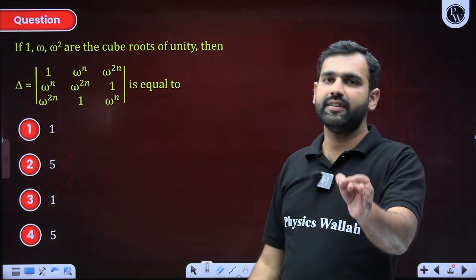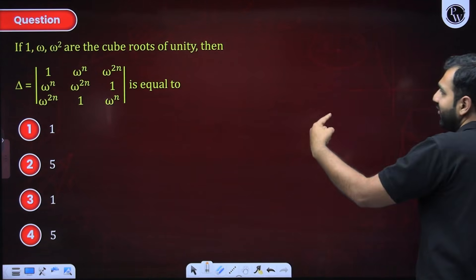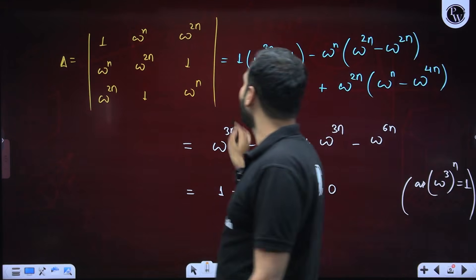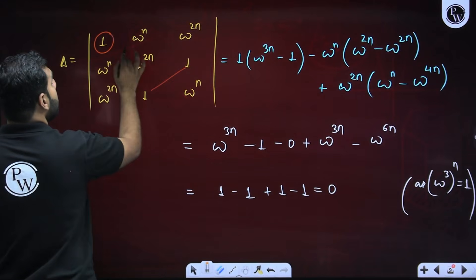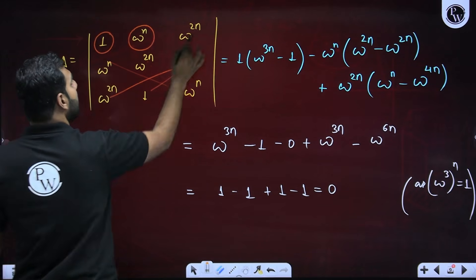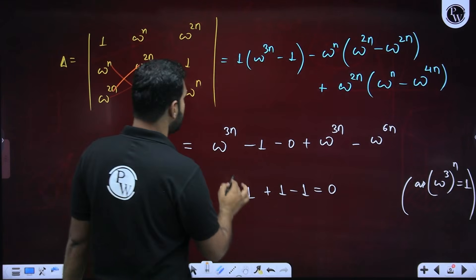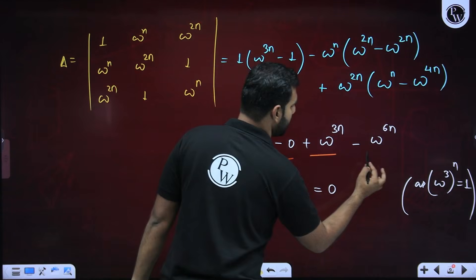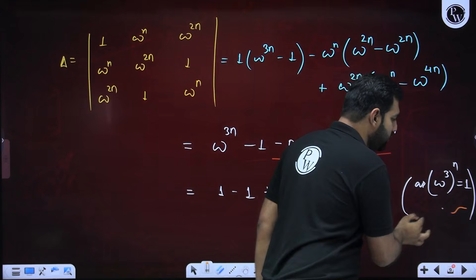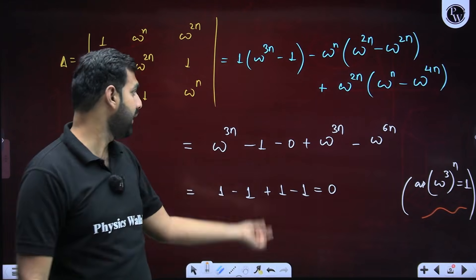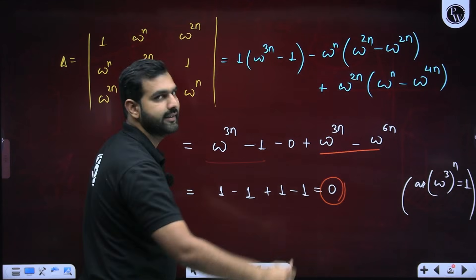Look at this example where complex numbers are merged with matrices and determinants. 1, ω, ω² are the cube roots of unity and we need to find this determinant's value. If I expand along the first row, I get terms involving ω^(3N), ω^(6N). Since ω³ = 1, ω^(3N) = 1 and ω^(6N) = 1 as well — any multiple of 3 in the exponent gives 1. So 1 minus 1 is 0, and 1 minus 1 is 0. The answer is 0.